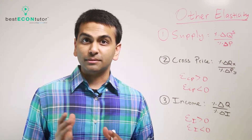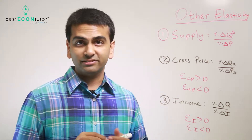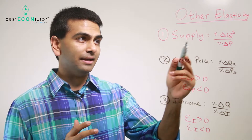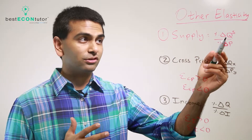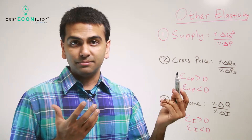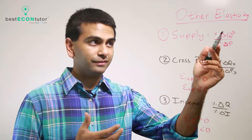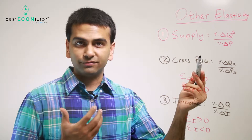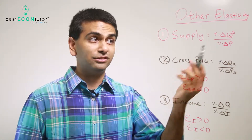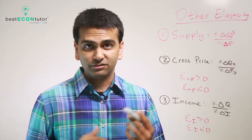Now let's look at some other types of elasticities. Elasticity of supply is calculated the exact same way as the elasticity of demand: percent change in quantity supplied over percent change in price. You can apply the midpoint formula — difference over average for quantity and for price. Notice this is always going to be positive naturally, so you don't need absolute values because the supply curve slopes upwards.